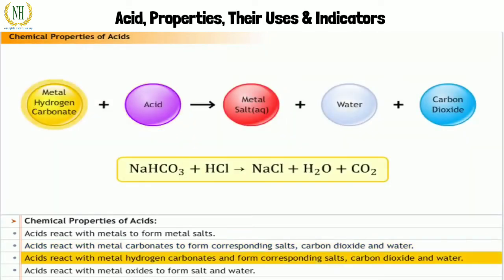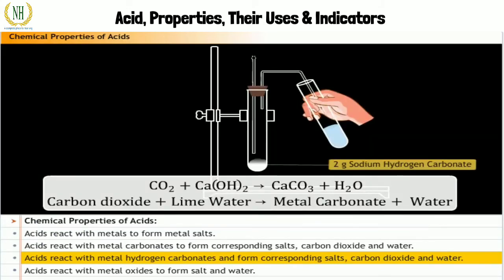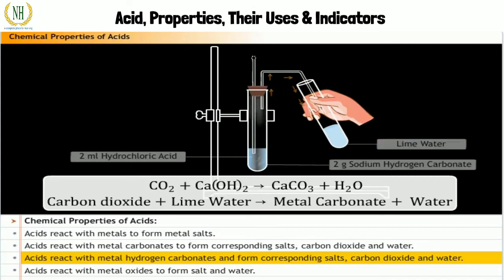Acids react with metal hydrogen carbonates and form corresponding salts, carbon dioxide, and water. Take two grams of sodium hydrogen carbonate in a test tube. Pour two milliliters of hydrochloric acid into the test tube. You will see that a gas evolves. Pass this gas through freshly prepared lime water. The lime water turns milky, indicating that the gas evolved is carbon dioxide. A white precipitate of calcium carbonate is also formed.